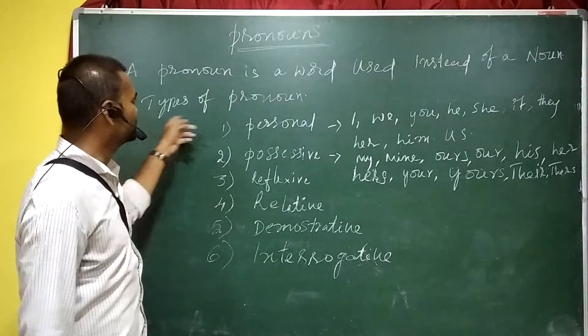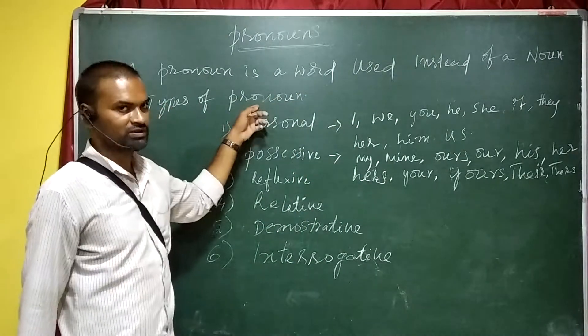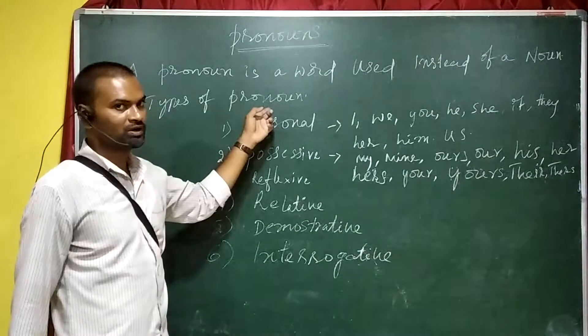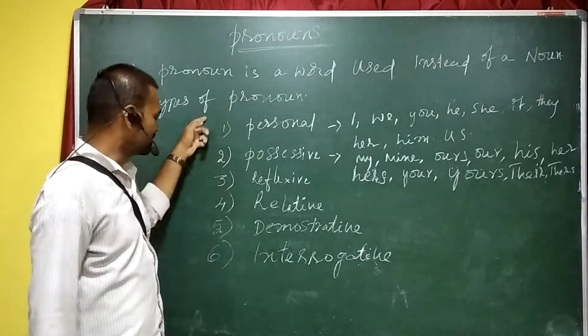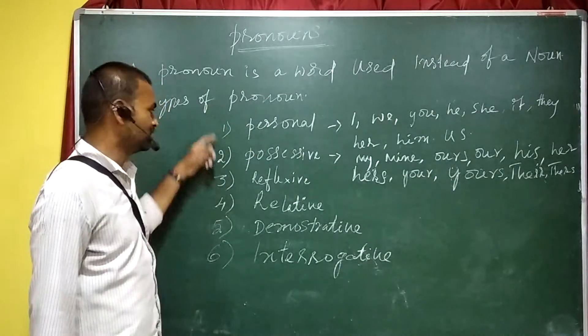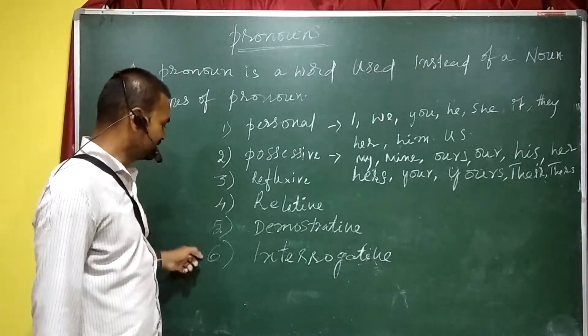So, types of pronouns. How many types of pronouns are there? Pronouns are six kinds.